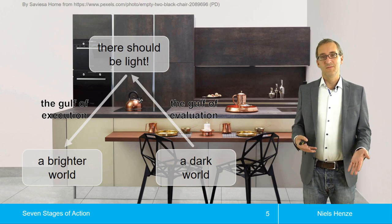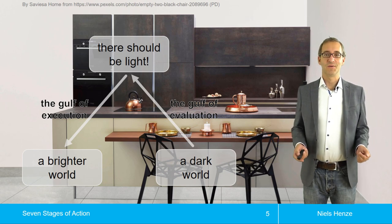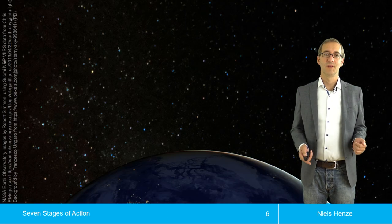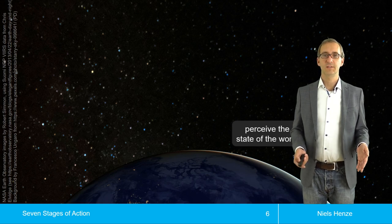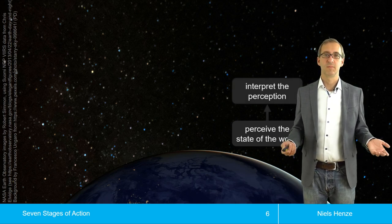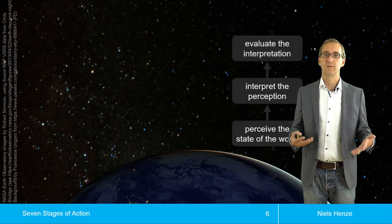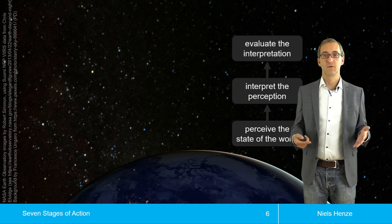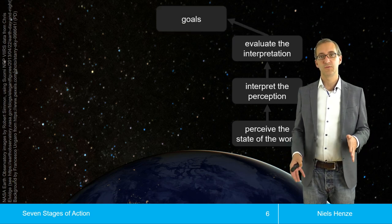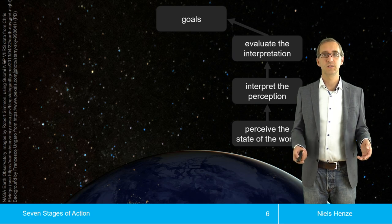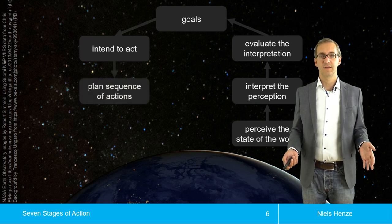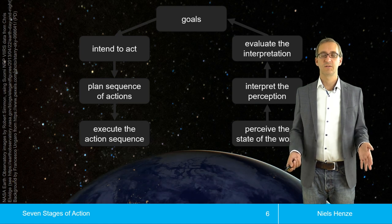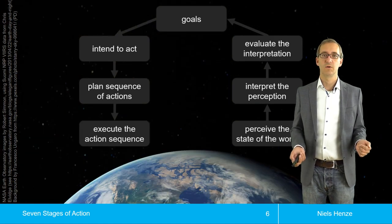Norman brings the model down to seven different stages. First, you perceive the world. Then you interpret your perception. Then you compare and evaluate your interpretation against how the world might look. You use that to form a goal. Then you derive the intent to act. You plan a sequence of actions. Then you execute the action sequence, and hopefully turn on the light.